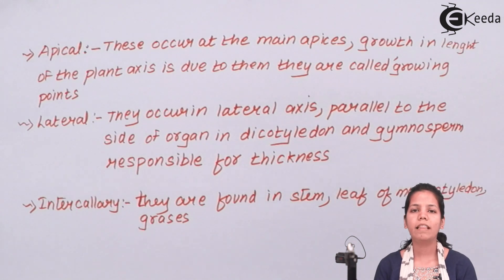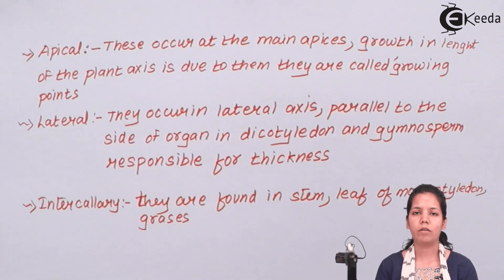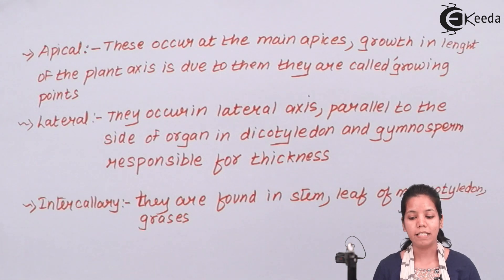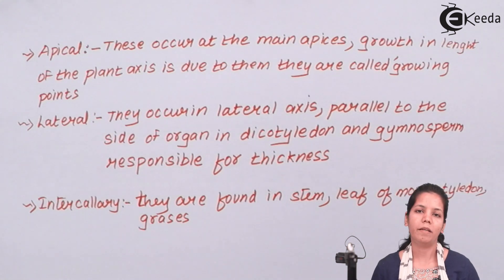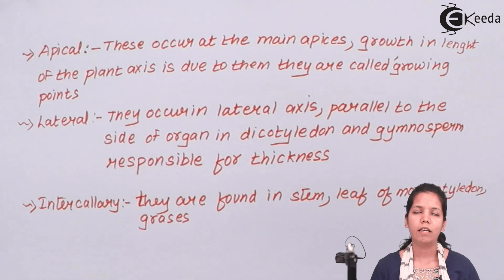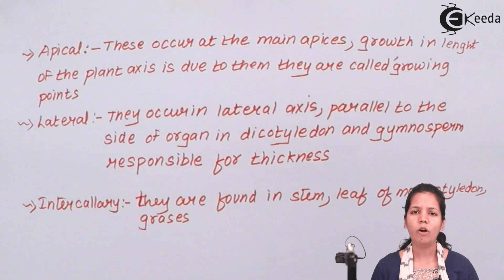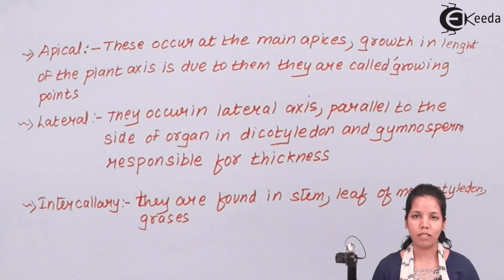Students, in this part of the chapter we have studied about tissues, and basically about primary meristematic tissues and how they are classified depending upon the place or origin where they are present. I hope you are clear about this concept. Thank you.